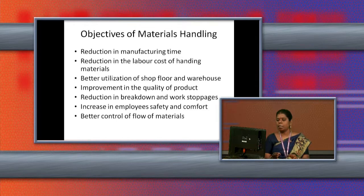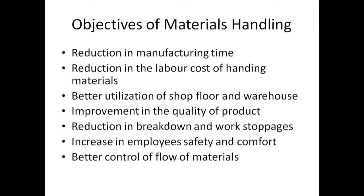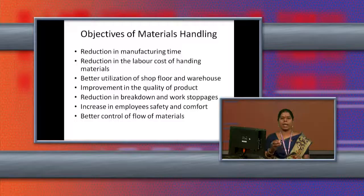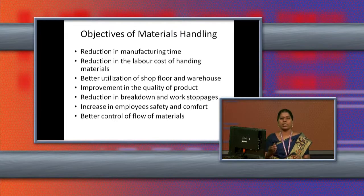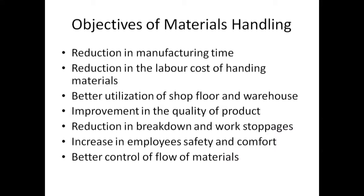The next objective is reduction in breakdown and work stoppages. If human beings are used in production and they are affected by any problem, they won't come to the production department and the production process will be stopped. If we use mechanized material handling equipment, breakdown or stoppages of production can be avoided.